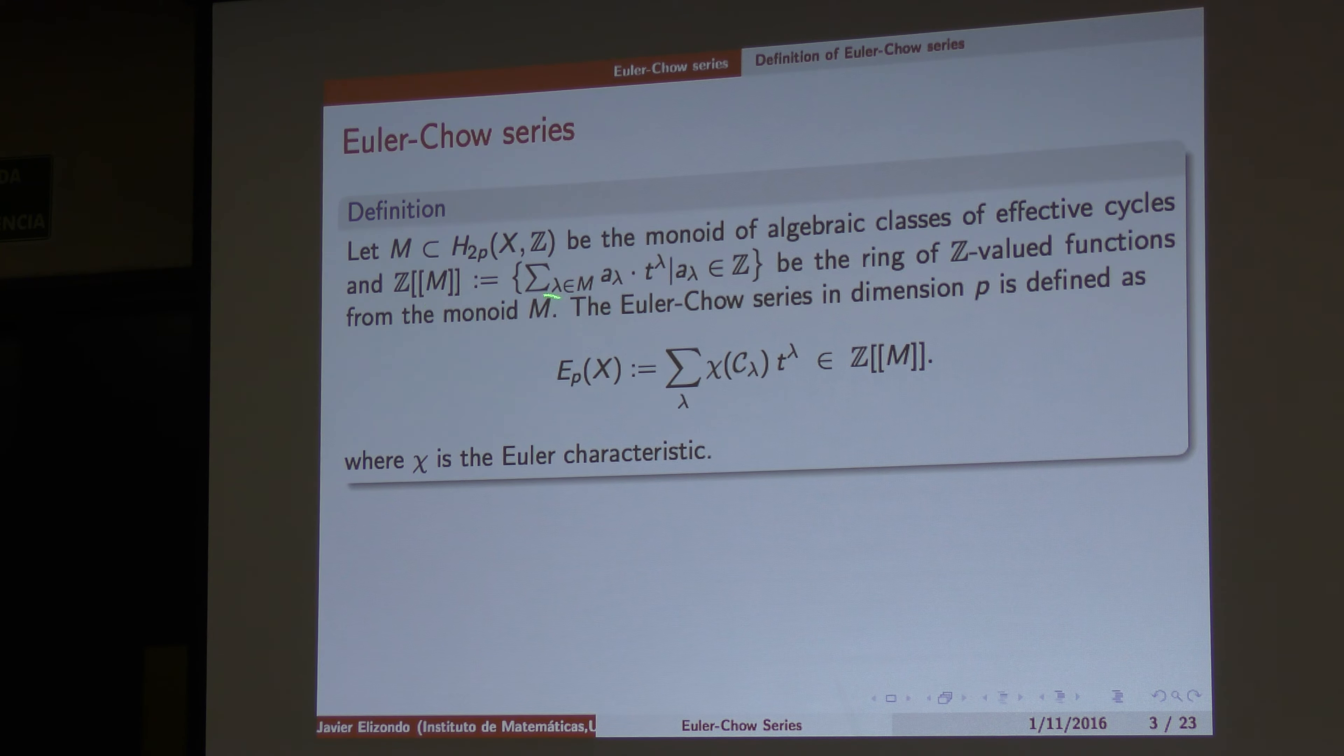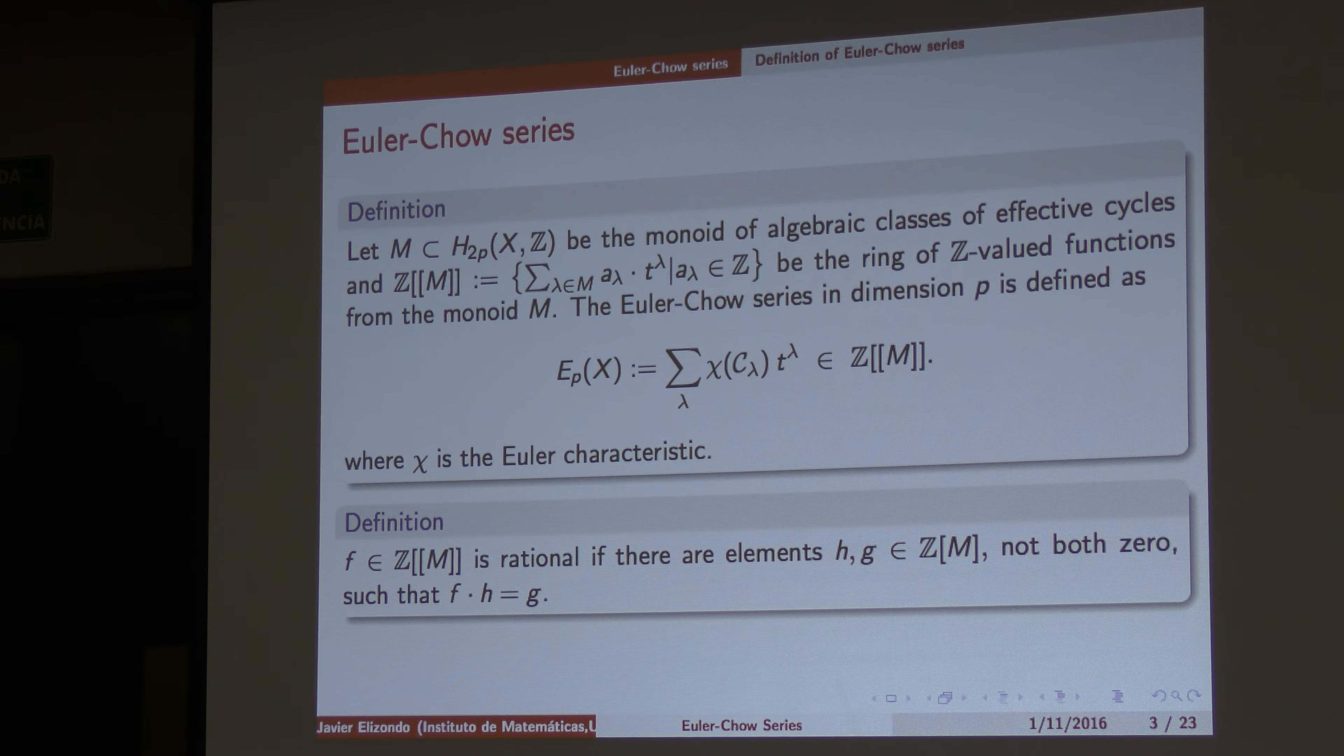So, we take the monoid of effective cycles in homology, and we define this space. This space is just the functions from the monoid to the integer numbers. And we take one element there. This is the Euler characteristic series in dimension P. And this is the Euler characteristic series of lambda. So, we say that an element here is rational if we have two polynomials, numerator and denominator, so that it's half.